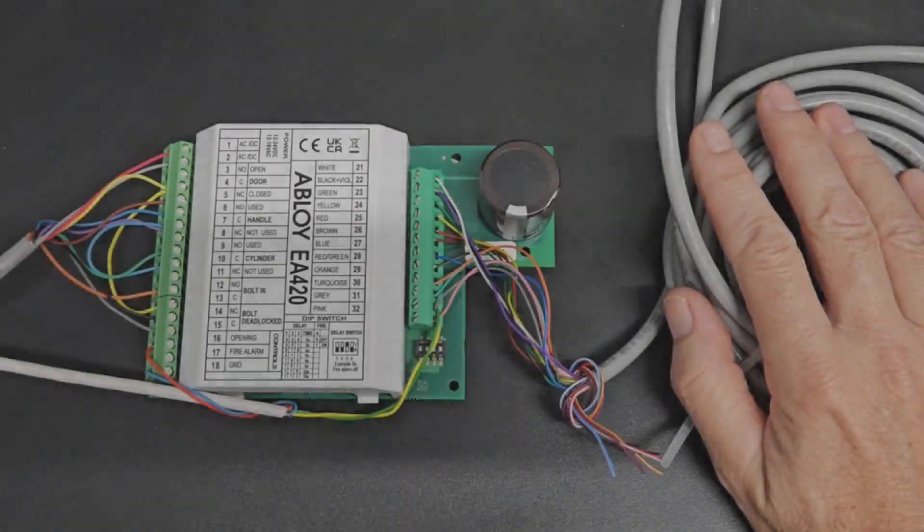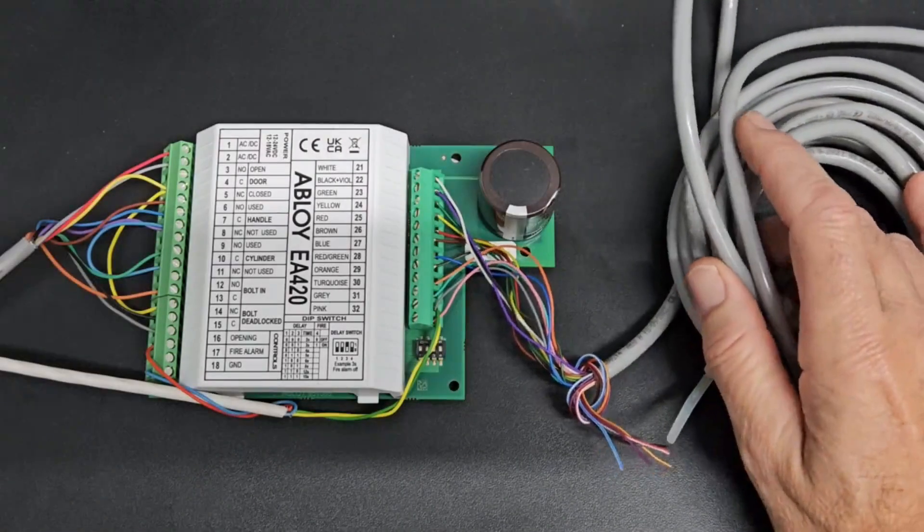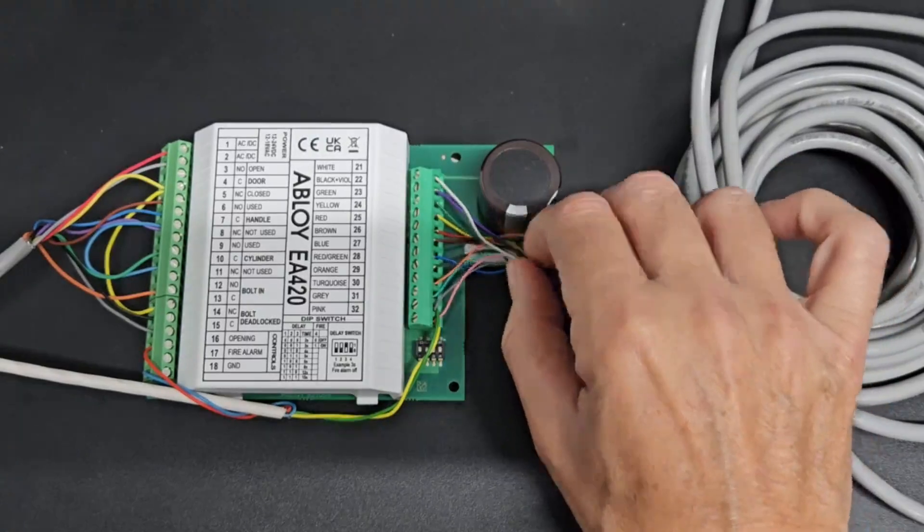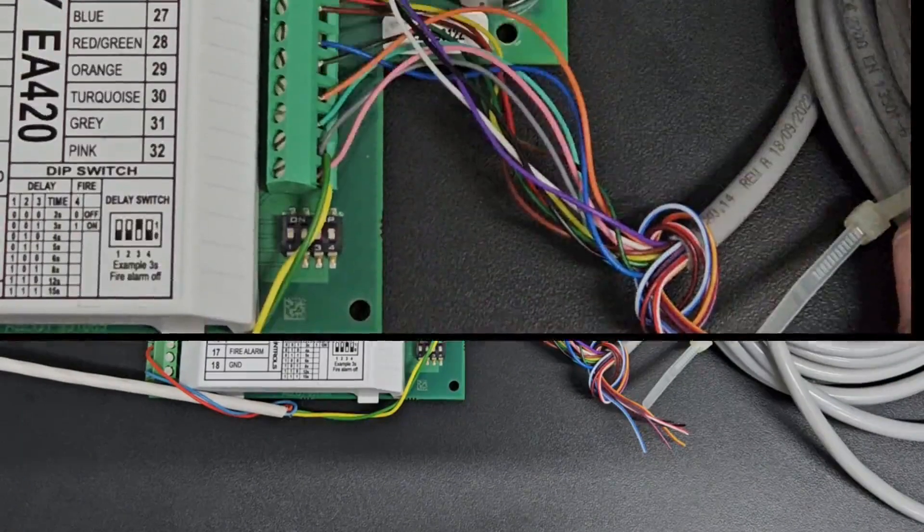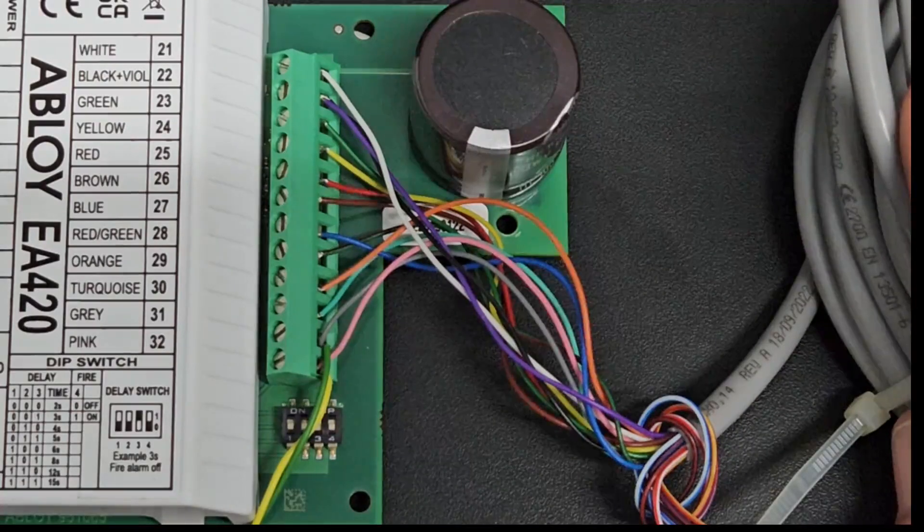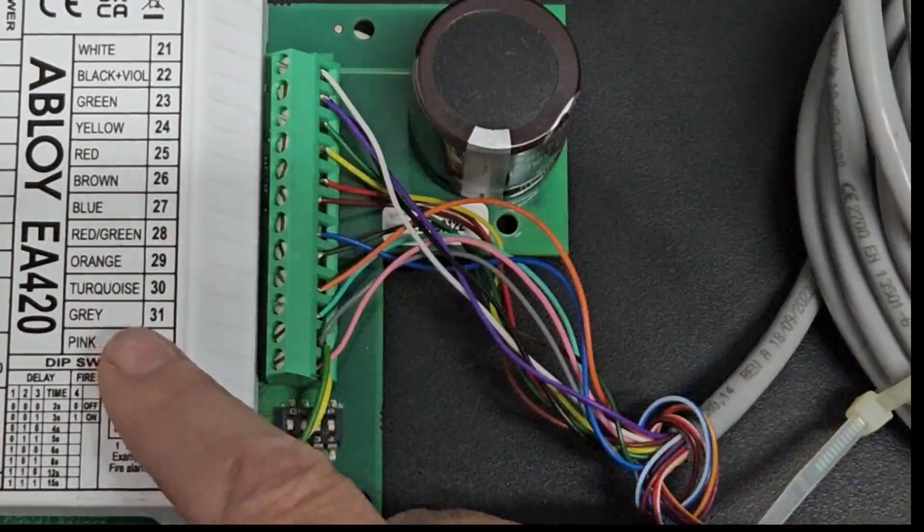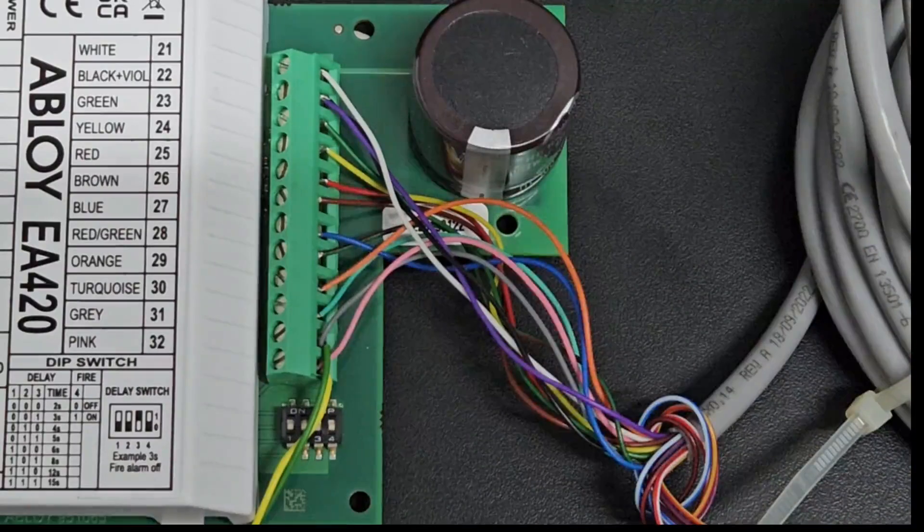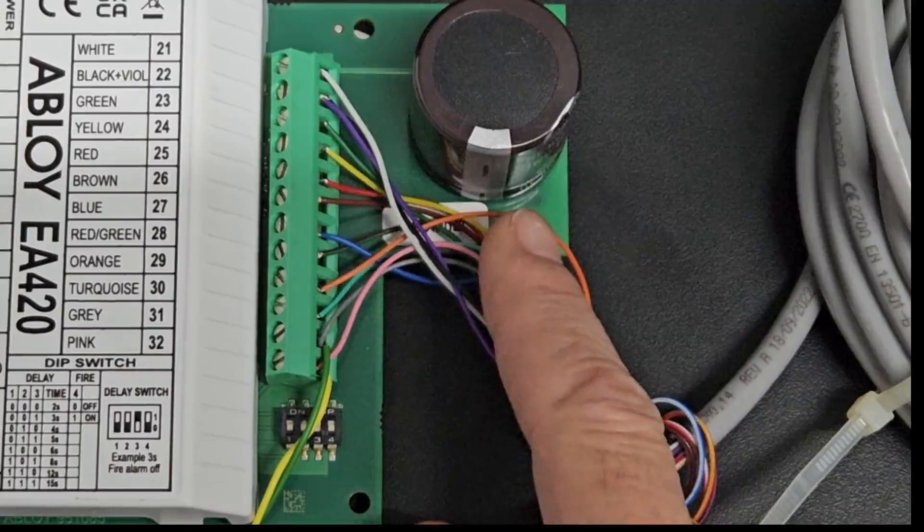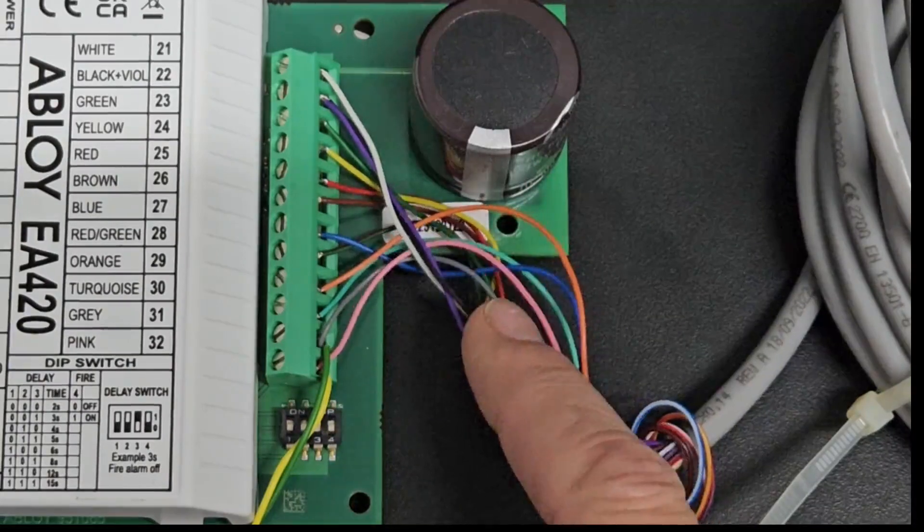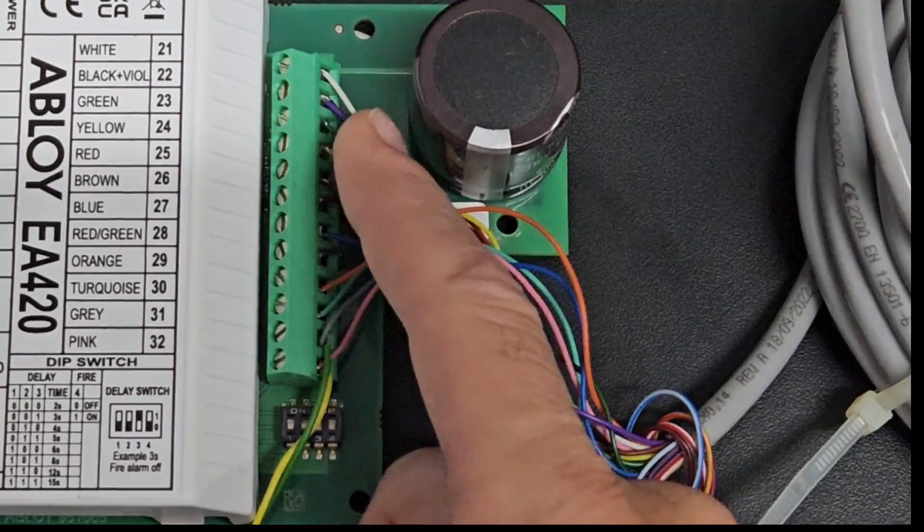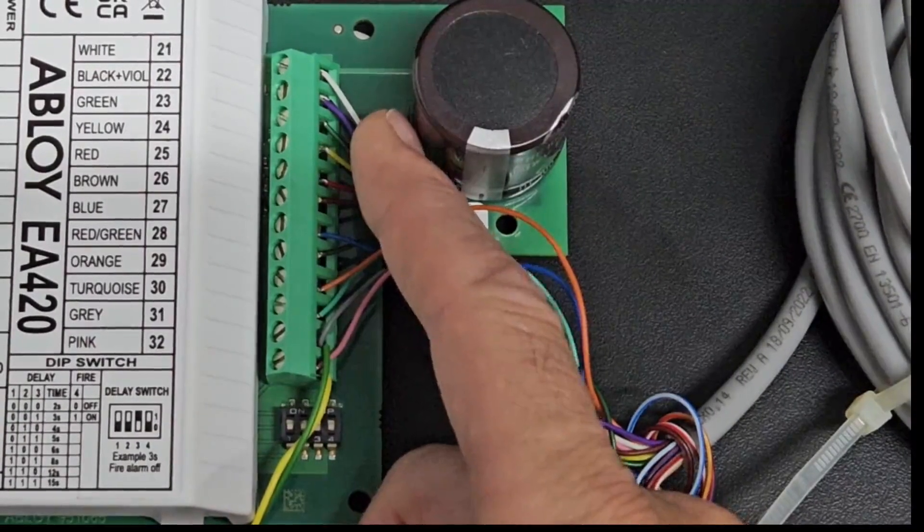This is the cable that comes with the EL520 motor lock. Wiring is very simple and I'll walk you through that process now. Trim the lock cable so it's long enough to reach from the lock to the EA420 with 30-60cm of spare. Strip back the outer sheath to expose 10cm of the colored wires and strip back the ends to reveal 5mm of copper.